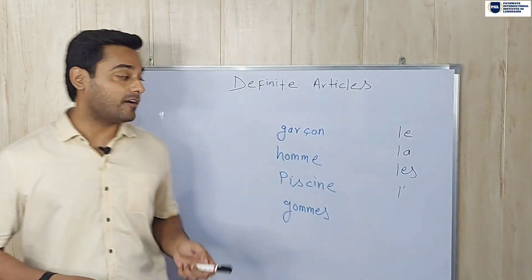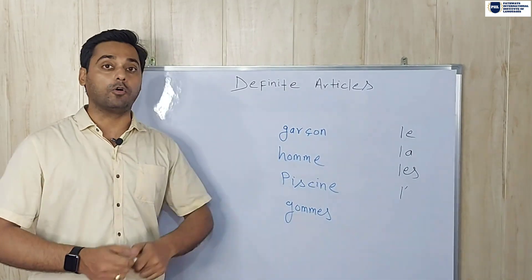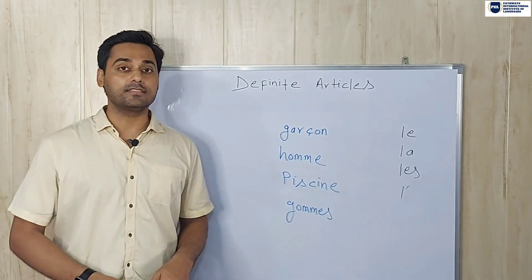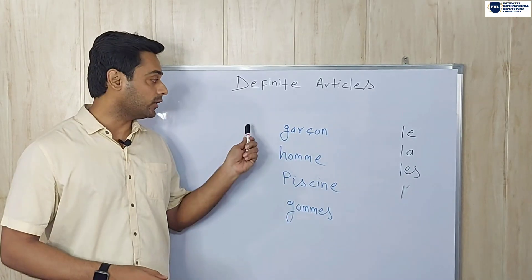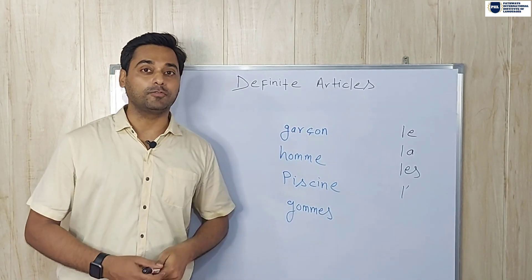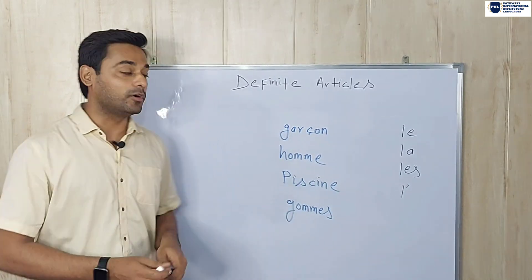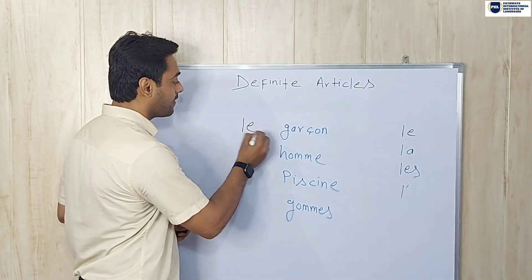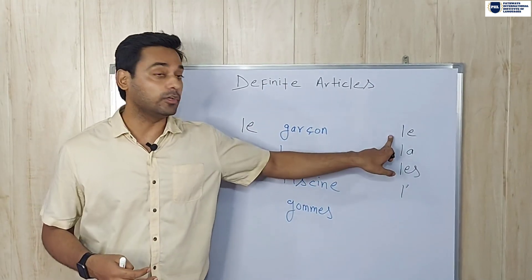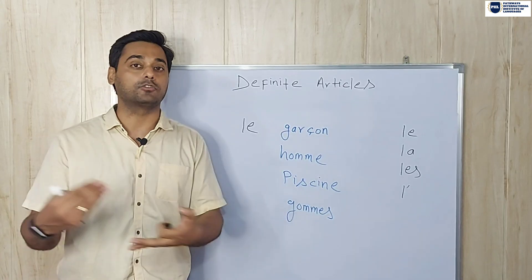Now let's do some practice. I have written these nouns and you have to put the right definite article in front of each. The first noun is 'garçon'. Which definite article will you put? Garçon means boy — masculine and singular. So we put 'le'. According to the rule, we use 'le' before any masculine singular noun. So 'le garçon' — the boy.